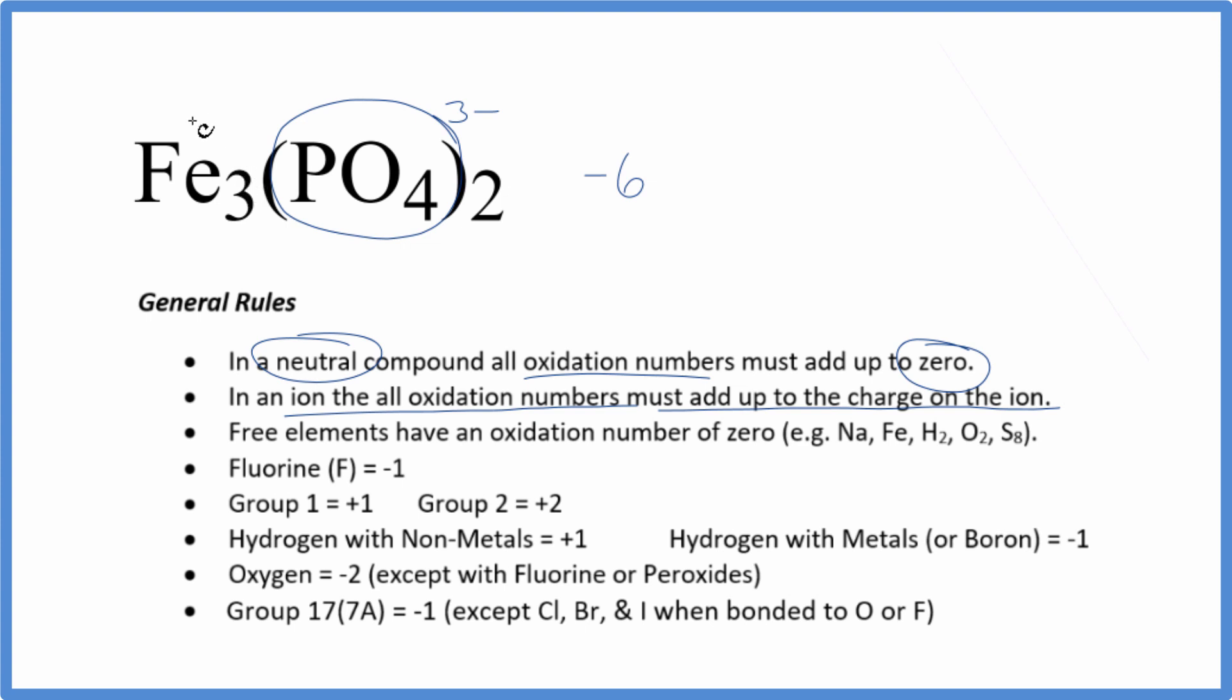That means the iron is going to have to be plus two, so that everything will add up to zero. Three times plus two, that's plus six. We have our minus six for all of this, which gives us zero.